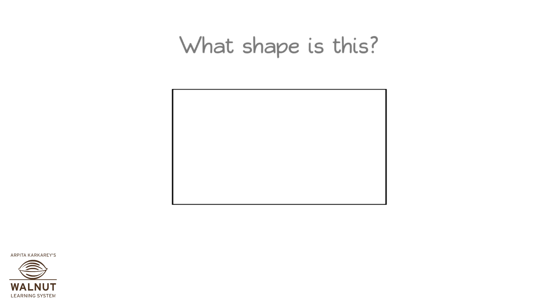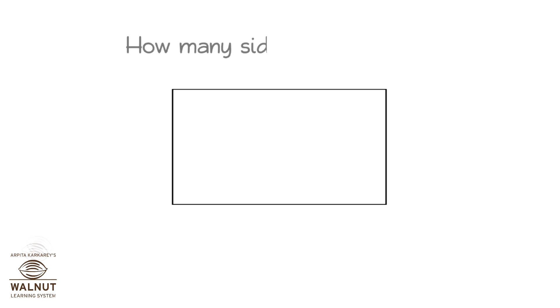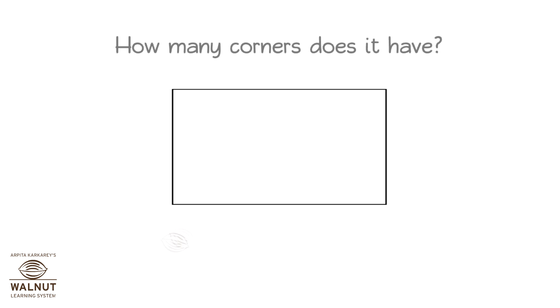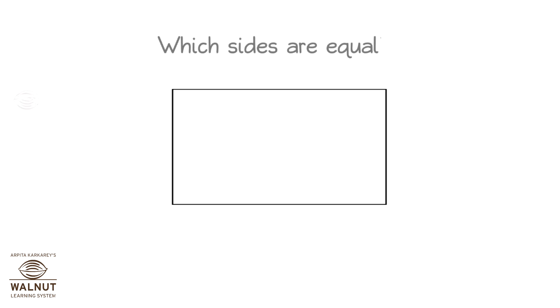What shape is this? Rectangle. How many corners does it have? Four. Which sides are equal? Opposite sides.